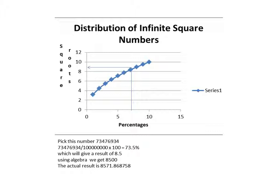This graph was reflected in the line y equals x. If you find a percentage, for example 73476934 and you divide by 1 and 8 zeros and you get 73.5%, well, instead of 73.5% because you're using on the horizontal x-axis from 0 to 10, you'll use 7.35%.